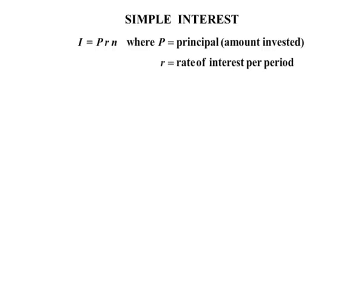Simple interest. The formula I equals PRN, where P is equal to the principal which is the amount invested, R is the rate of interest per period, and N is the number of periods.